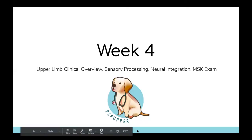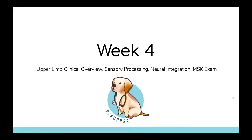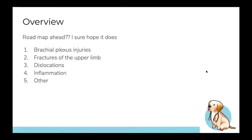Welcome to week four. We'll be taking you through a clinical overview of the upper limb — the actual important stuff you should know: sensory processing, neural integration, and the MSK exam. The overview of what we're going to cover includes brachial plexus injuries, fractures of the upper limb, dislocations, inflammation, and other stuff. This may link in with what you've already learned in your recent revision lecture.